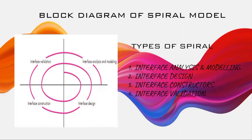The first phase is iterative analysis and modeling, the second is interface design, third is interface construction, and fourth is interface validation. Once the first spiral is done, the second begins, and this process continues as many times as the project has been divided into sub-parts. If divided into three sub-parts, three spirals will be completed. This is exactly how the spiral model works.